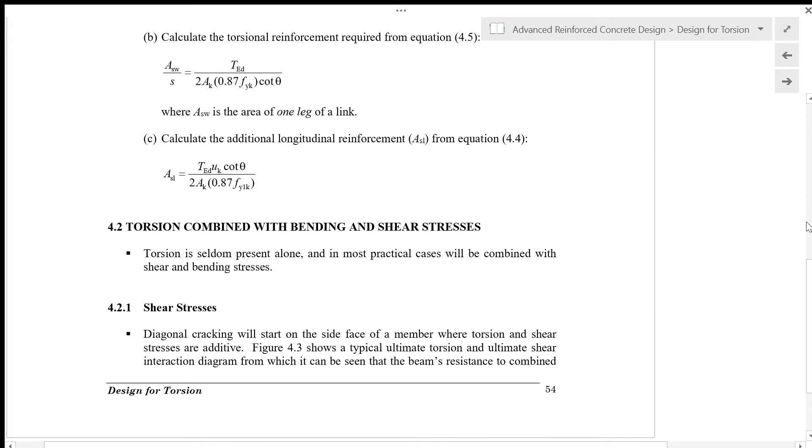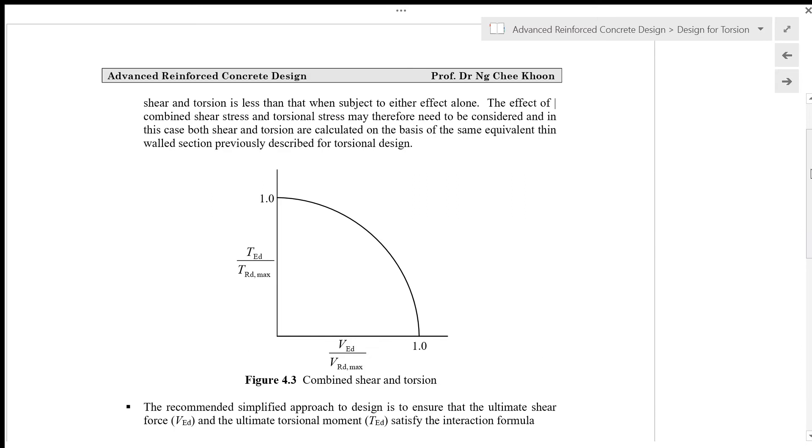Figure 4.3 shows a typical ultimate torsion and ultimate shear interaction diagram from which it can be seen that the beam's resistance to combined shear and torsion is less than that when subject to either effect alone. The effect of combined shear stress and torsional stress may therefore need to be considered and in this case both shear and torsion are calculated on the basis of the same equivalent thin wall section previously described for torsional design.